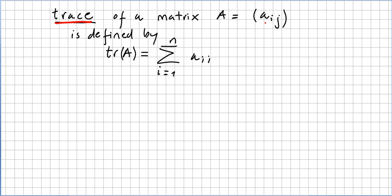So the trace of a matrix A, and the matrix will be A_ij, is defined by tr. So the trace of A is the sum of the diagonal, all the A_ii.